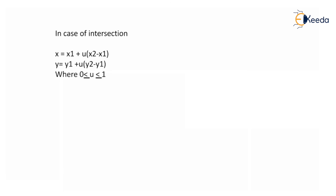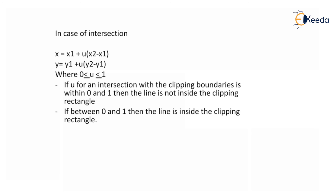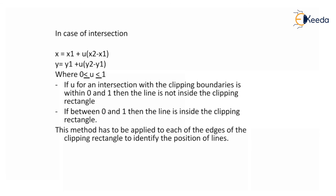For intersection calculations we use the line equation: x = x1 + u(x2 − x1) and y = y1 + u(y2 − y1), where u is a parameter that always lies between 0 and 1. If u for an intersection with the clipping boundary is within 0 and 1, the line is inside the clipping rectangle; otherwise it is not visible. This method is applied to each edge of the clipping rectangle to identify the position of lines.